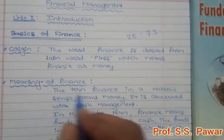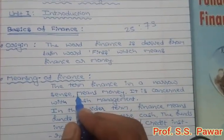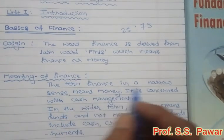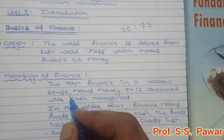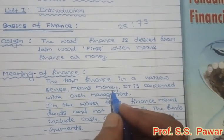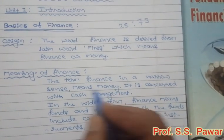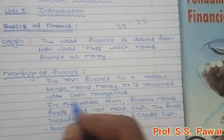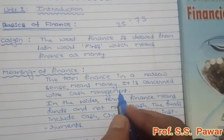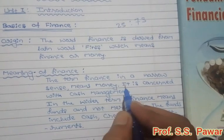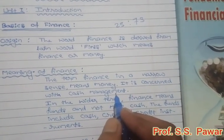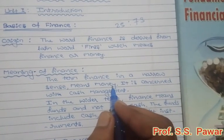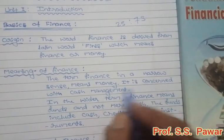Next, we will see the meaning of finance. The term finance in a narrow sense — that means in the short term — finance means money or just cash. It is concerned with cash management. So in the narrow term, finance means money or cash, and it is concerned with cash management.